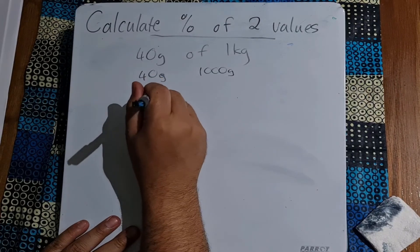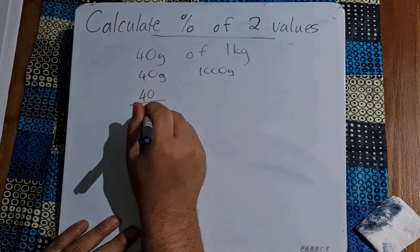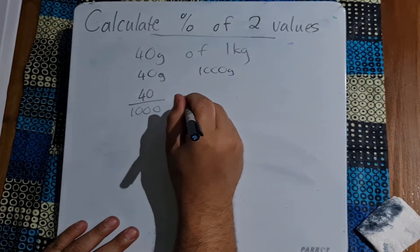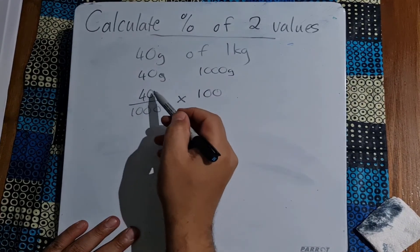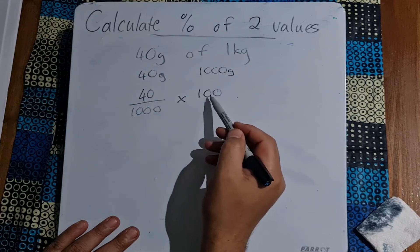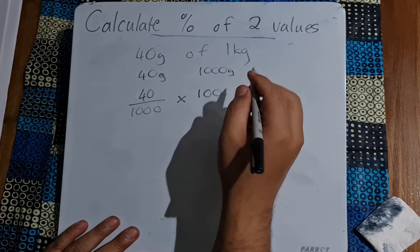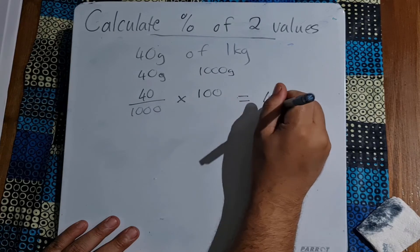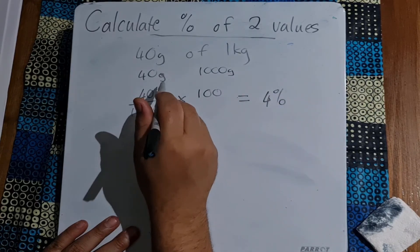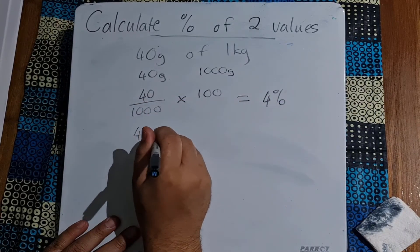Now how are we going to do this? We're going to take our 40 grams, divide it by the 1000 grams, and then multiply it by 100. Now we've got our two values, we're multiplying it by 100, and we end up getting our answer of 4 percent. Remember we can do it this way as well. Get that answer first, multiply it by 100, and we'll still get our 4 percent.